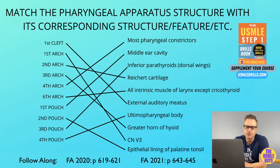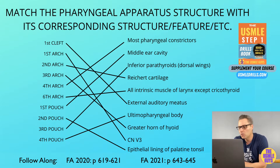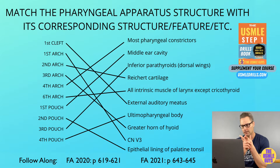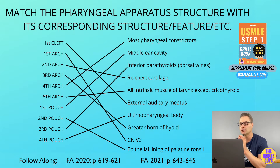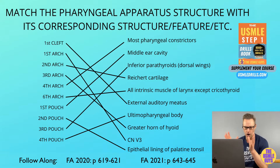The pharyngeal arch is derived from the mesoderm and the neural crest. While there are six pharyngeal arches, the fifth will regress soon after formation. Each arch has an associated cranial nerve, a muscular component, a vascular component, and a skeletal and cartilaginous supporting element. In adults, each pharyngeal arch is associated with specific structures within the head and neck. Let's look at the arches and their anatomy before moving on to the pouches.